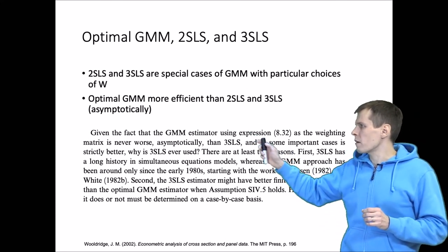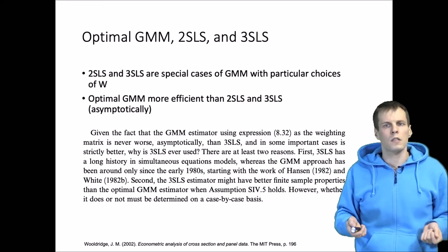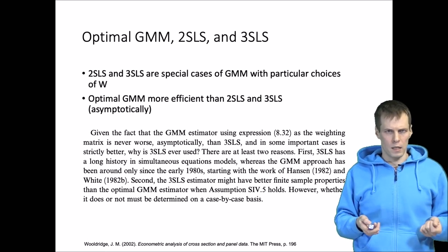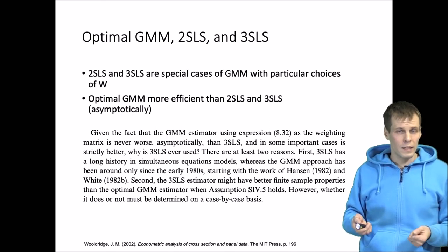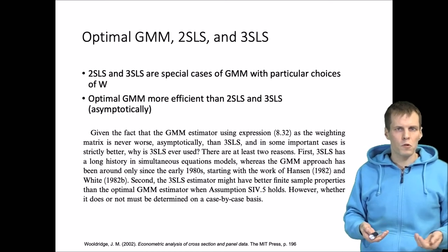Optimal GMM is more efficient than two-stage least squares and three-stage least squares. One might ask why we are using three-stage least squares at all and why econometrics books talk about this technique. The reason is that this was introduced before GMM, and because it has been around, people use it.